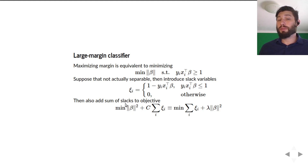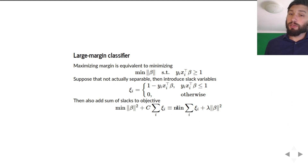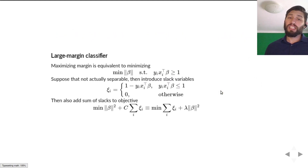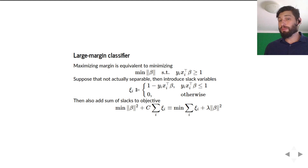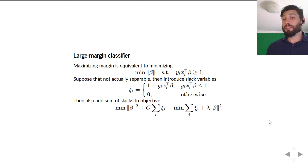We introduce the slack variables into the objective: minimize the norm of beta squared plus C times the sum over i of the slack variables. This is equivalent to minimizing the sum of slack variables plus lambda times the norm of beta squared, where lambda equals 1 over C. Looking at this, the slack variable is just the positive part of 1 minus y_i times x_i-transpose beta — which is exactly the hinge loss. So this turns out to be exactly the ridge-regularized hinge loss problem stated before.